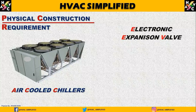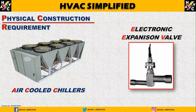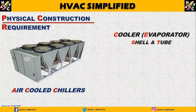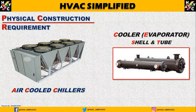Next is the electronic expansion valve — this is the electronic expansion valve of the air-cooled chiller. Then our last major component is the cooler, which can also be called the evaporator. This is the shell and tube cooler, where the actual cooling occurs — refrigerant and chilled water piping.